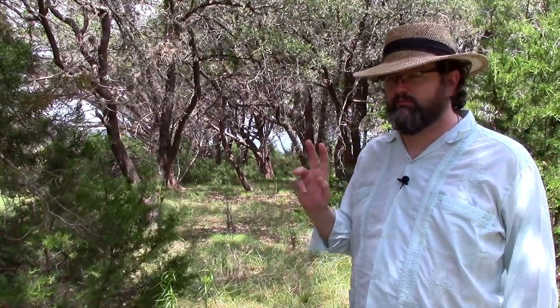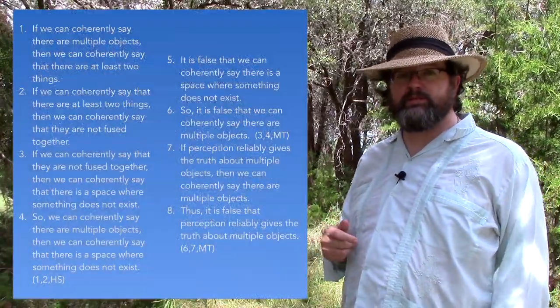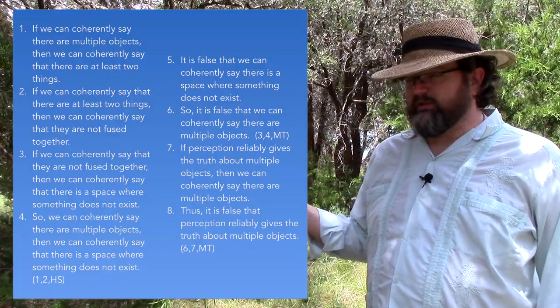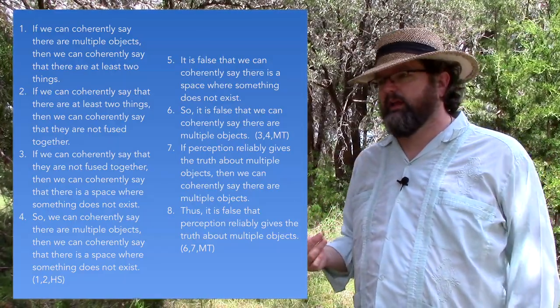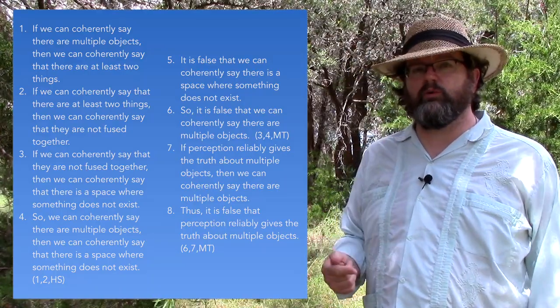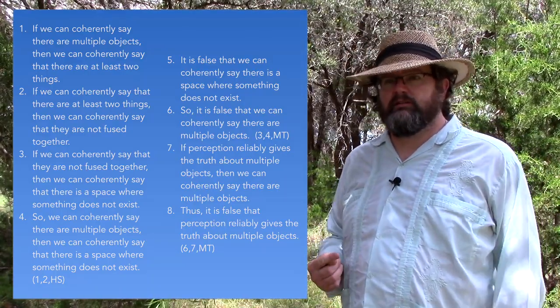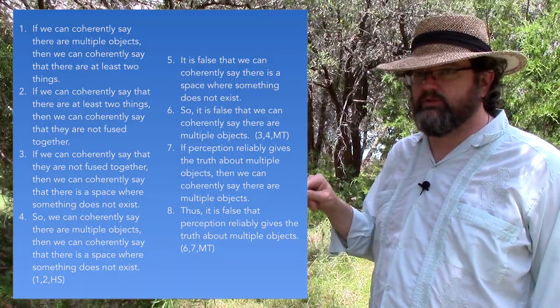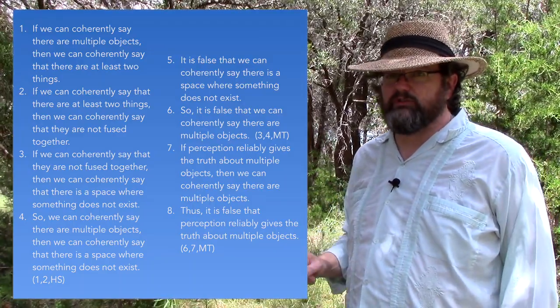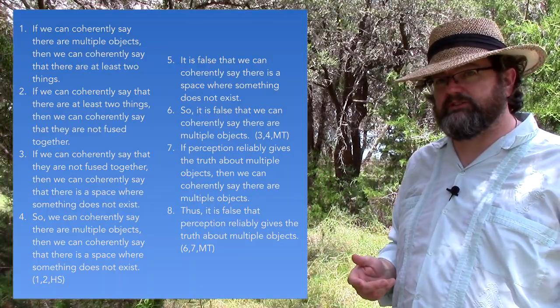Now here's the problem, at least as we've constructed it: Parmenides' conclusion is the product of a deadlockingly valid argument. You've seen this before, but I'm reproducing it here. That means we can't just reject the conclusion and walk away. If it's a deadlockingly valid argument and the premises are true, the conclusion must be true. So if the conclusion is false, at least one of the premises must be false.